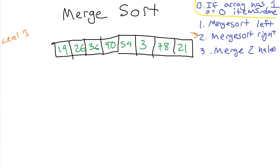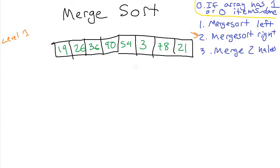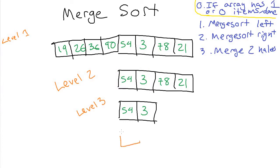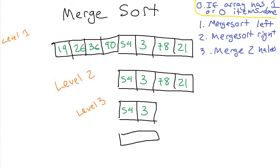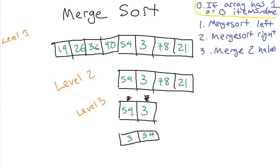We make a new recursive call for the right half of the original array — we're now on level two of the recursion. To sort this four-element array, we first sort the two-element left half: that's 54 and 3. We're at level three. We sort the left half — just 54 — that's a base case, done. Then we sort the right half — just 3 — also done. Then we do the merge step: we put the 3 first and then the 54, because that's what the merge algorithm produces — take 3 first, then copy 54. That result cascades back up to level two, so 3 and 54 got swapped around and the left half is now sorted.